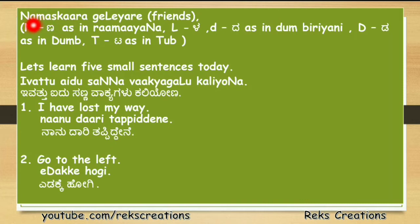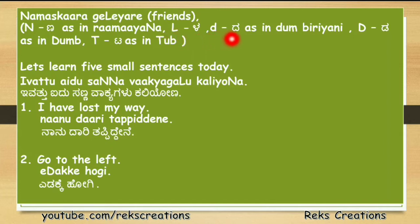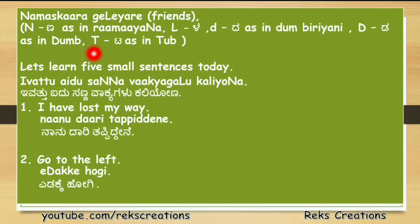Capital N is used as N as in Ramayana. Capital L is used as L. Small d is used as D as in Dumb Biryani. Capital D is used as D as in Dumb. And capital T is used as T as in Tub.